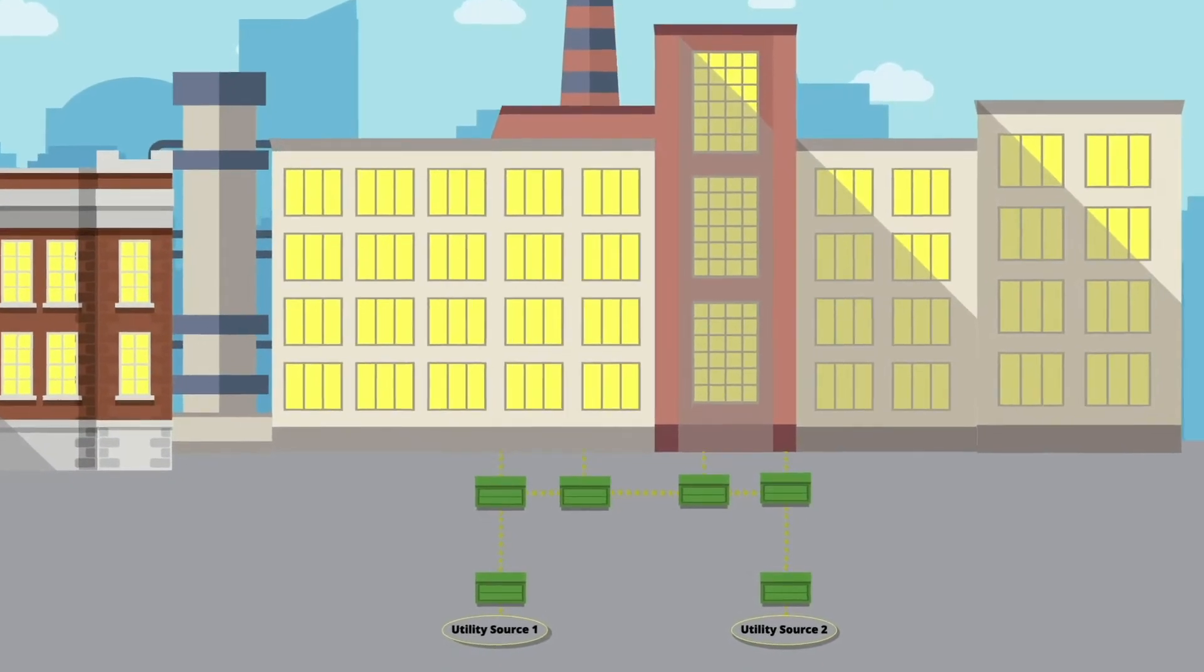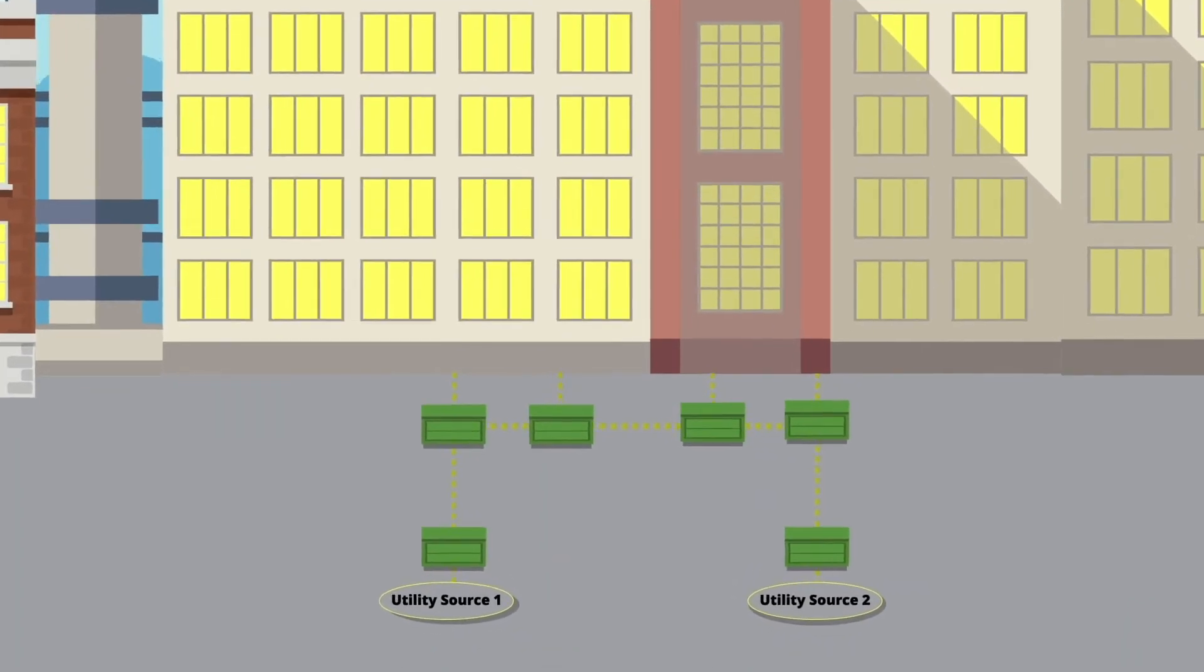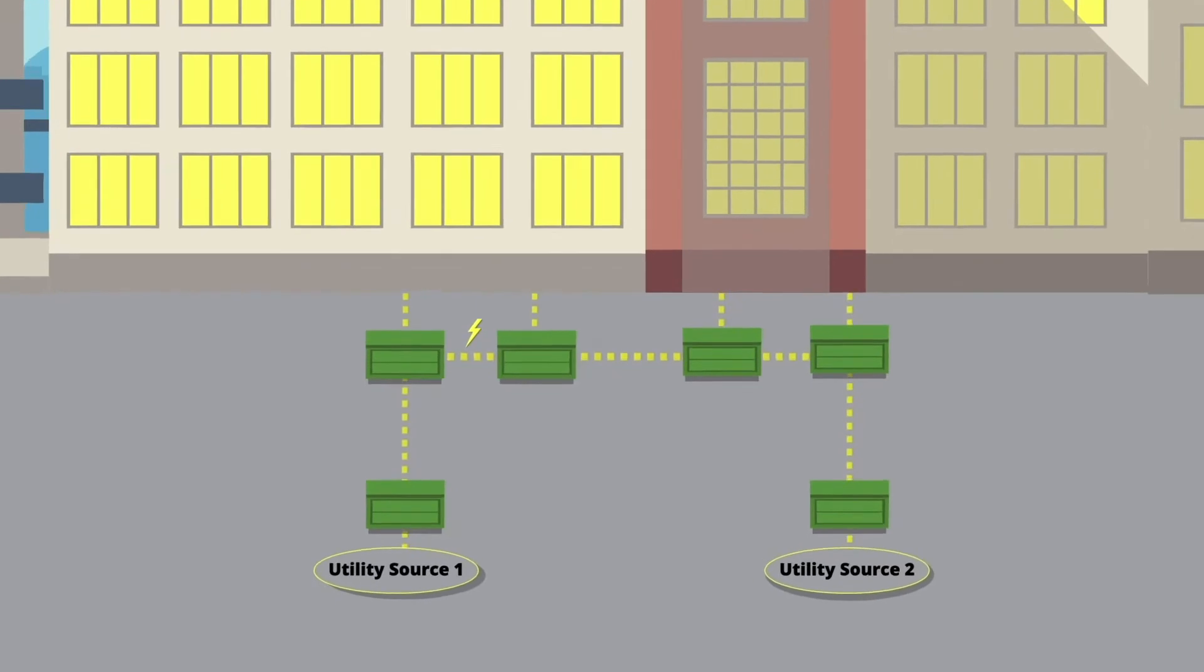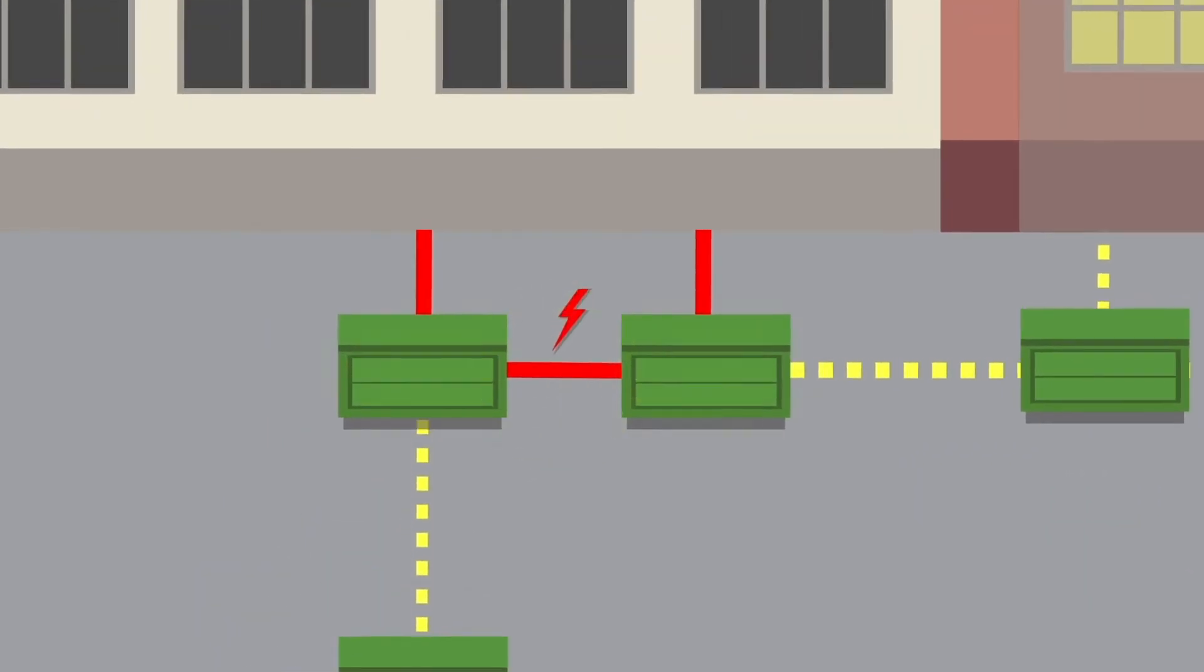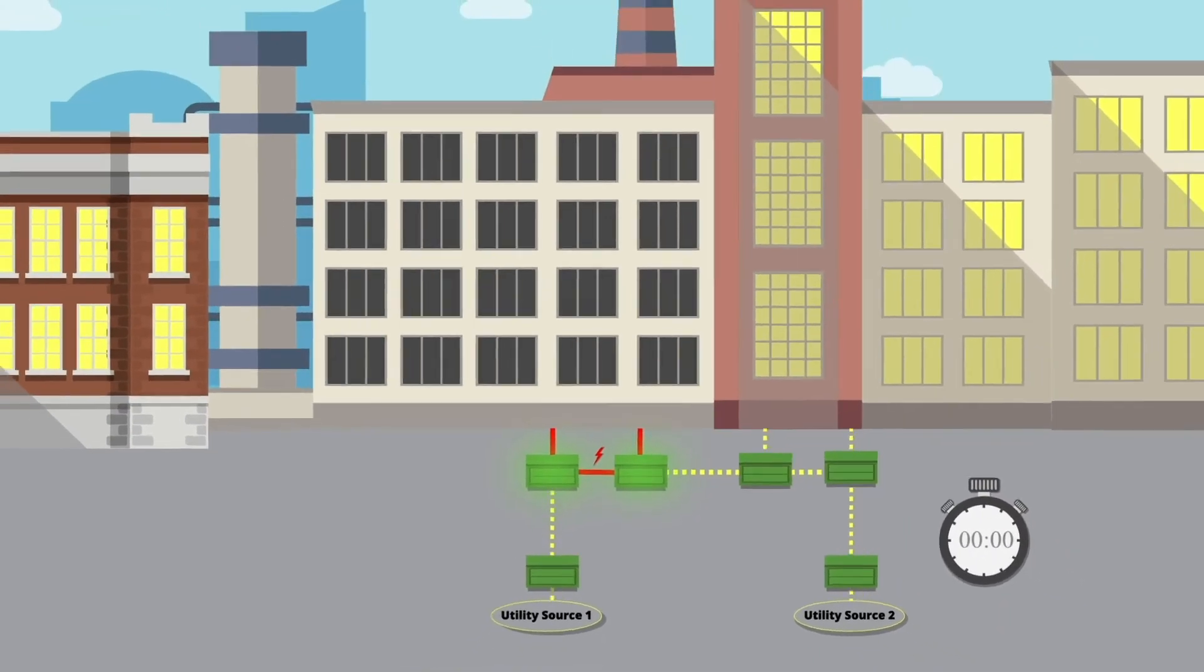A distributed design allows switchgear to be strategically located on your system, allowing you to properly segment your circuits. So when there's a problem, faults can easily be detected and isolated by the gear.